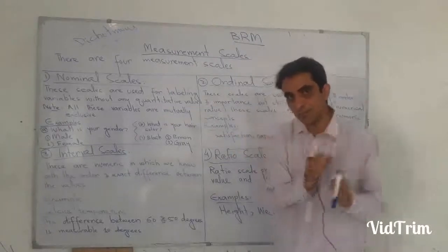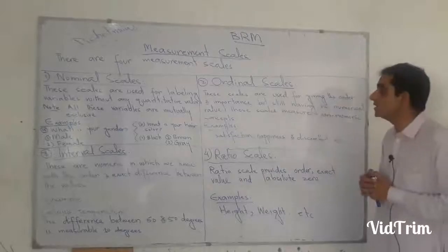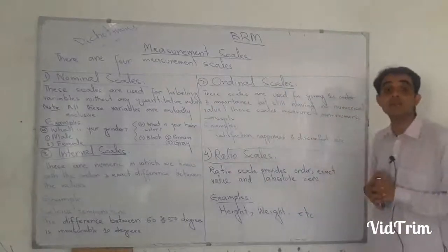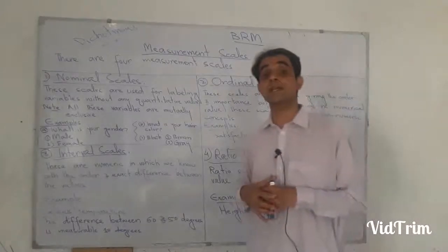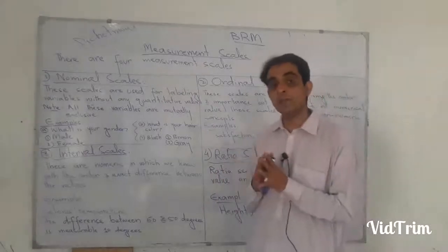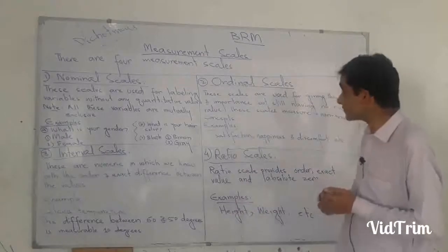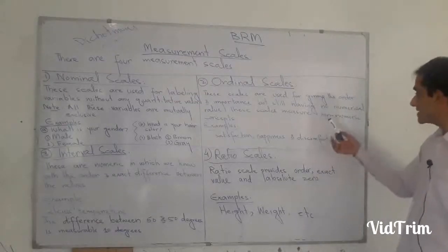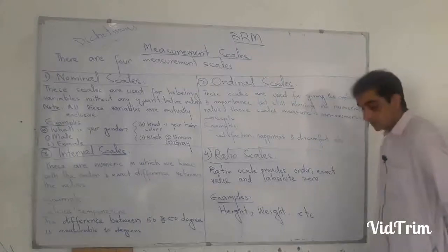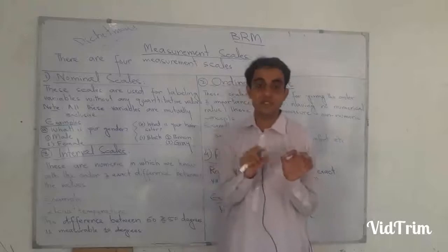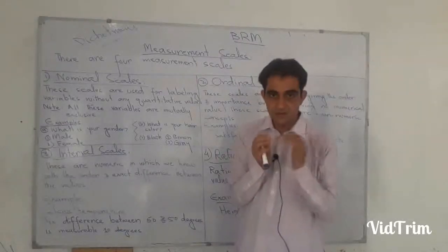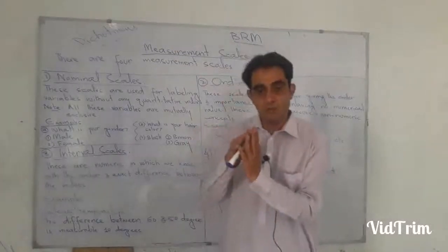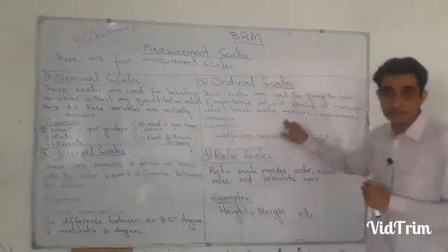Ordinal scales are different from nominal scales in that nominal had no order or importance, while ordinal has order and importance. However, they share one common characteristic: ordinal scales also carry no numerical value. You cannot say 'I am 10 degrees satisfied' or '20 degrees happy.' For example, in a questionnaire: 'What is your satisfaction level with the Samsung brand?' — not satisfied, less satisfied, average, more satisfied, most satisfied. This gives order but no quantitative value.